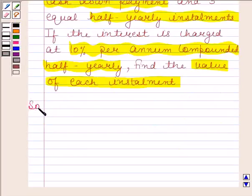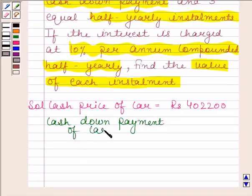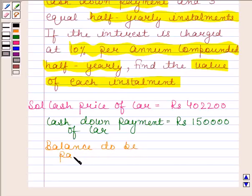Let us now begin with the solution. We are given that cash price of the car is Rs 402,200. Cash down payment of car is Rs 150,000. Now balance to be paid in installments is equal to Rs 252,200.